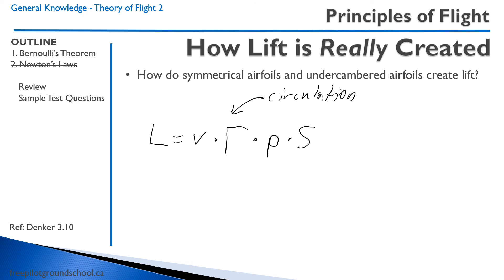People produce textbooks hundreds of pages long explaining why wings produce lift. So having a ground school with three or four slides about the Bernoulli theorem — and it's wrong anyway — is not going to cut it. But hopefully you'll be a bit motivated to read up on this more. I recommend you check out Denker's See How It Flies book — it's in the link below and you can see it in the reference section.